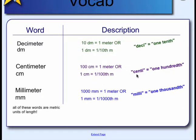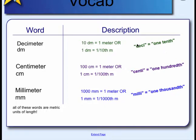Some other words you might come across today: a decimeter, or you can abbreviate it DM. A decimeter is equal to one tenth of a meter, or we can say that 10 decimeters are equal to one meter. And did you know that 'deci' actually means one tenth? So decimeter meaning one tenth of a meter.